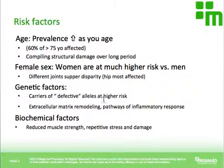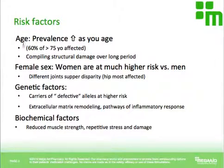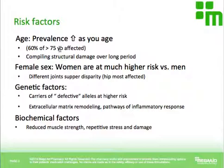What are some of the risk factors for osteoarthritis? It's a disease you really need to think of as structural wear and tear, an accumulation of bone micro damage. It makes sense that as you age and become older, you're much more likely to develop osteoarthritis. In fact, some statistics estimate that 60% of people at age 75 are affected, because you're essentially compiling structural damage over a long period.